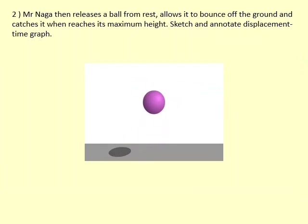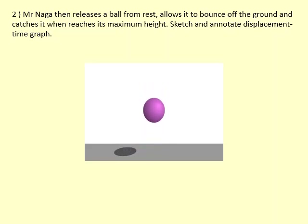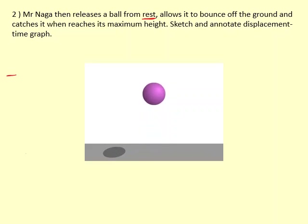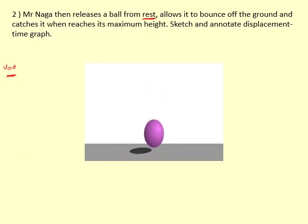Now in this case, Mr. Naga releases a ball from rest, allows it to bounce off the ground, and catches it when it reaches its maximum height again. Sketch an annotated displacement-time graph. This is only showing the ball bouncing. When I release it from my hand at rest, that means at the start I need to draw it with no gradient — velocity equals zero — so it should be flat.